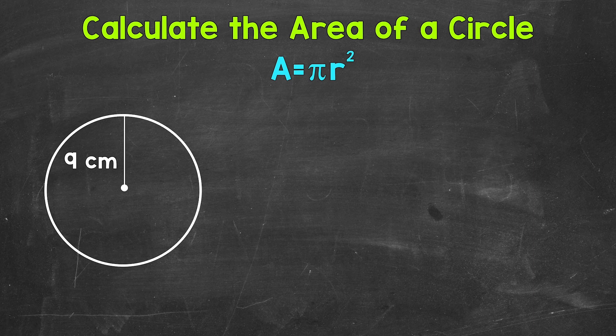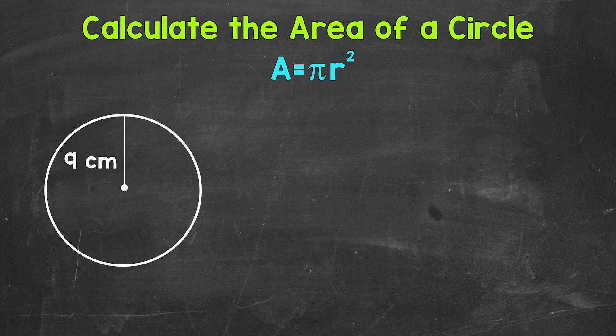We need to be familiar with both diameter and radius when we work with circles. Diameter is the distance all the way across a circle — a line segment that connects two points on the circle and goes through the center. The radius is half the diameter, going from the center to any point on the circle. And lastly, before our example, pi is the ratio of a circle's circumference to its diameter.